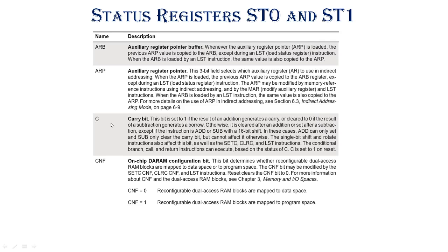C is the carry bit. This bit is set to 1 if carry occurs on addition; for subtraction it is 0. Add can only set and only clear the carry bit but cannot affect it otherwise. The single bit shift and rotate instructions, and conditional branch and return instructions, can execute based on the value of C. C is set to 1 on reset.